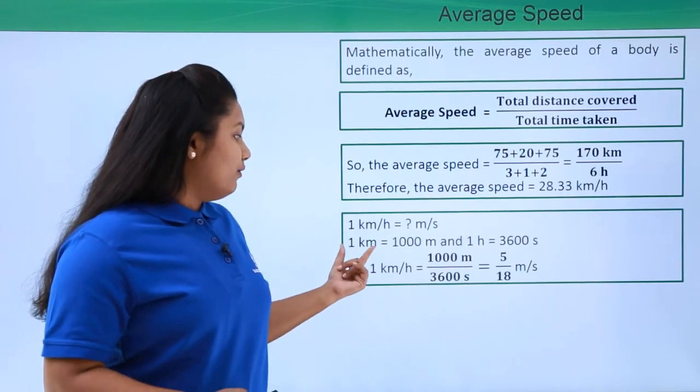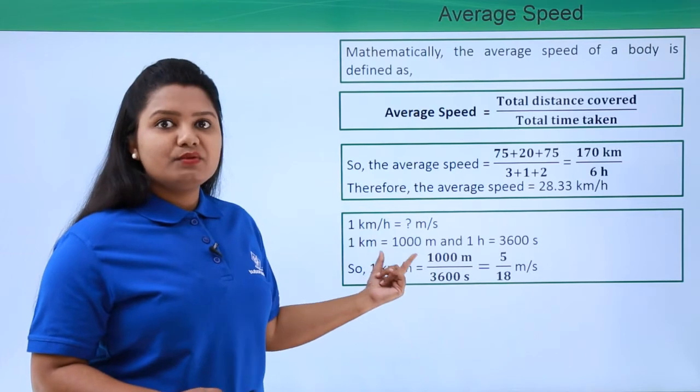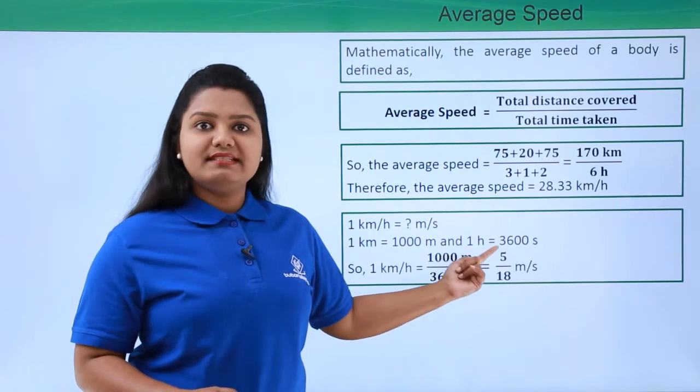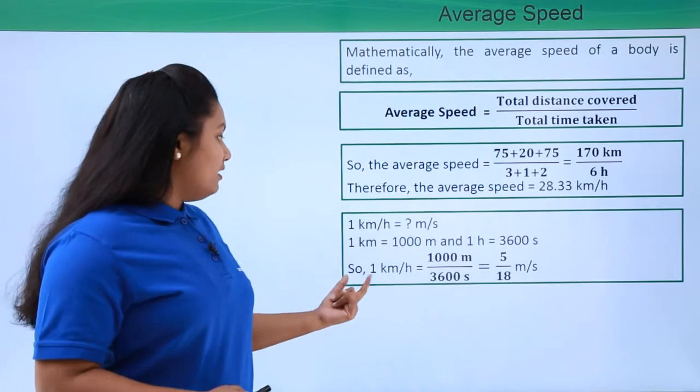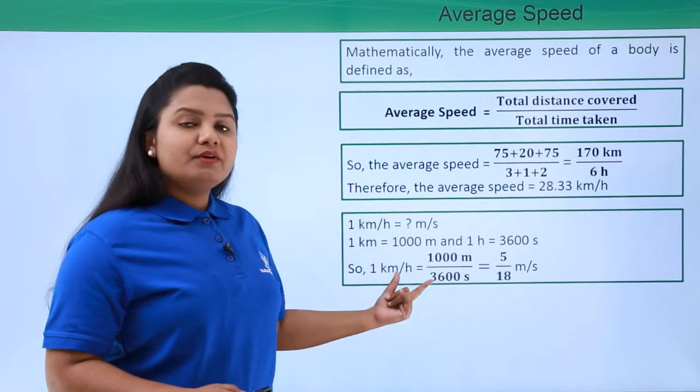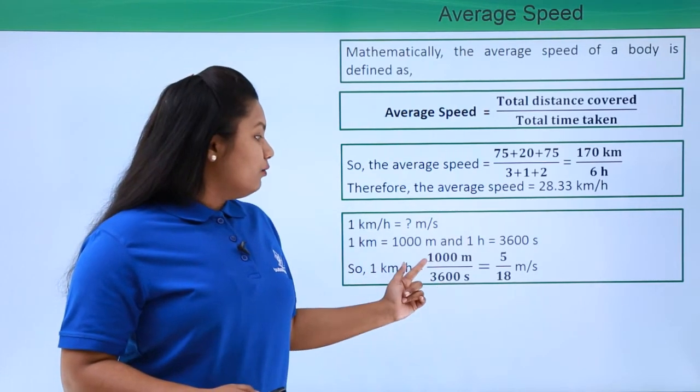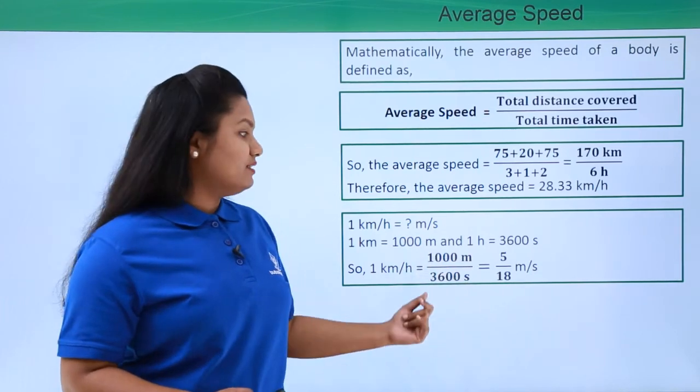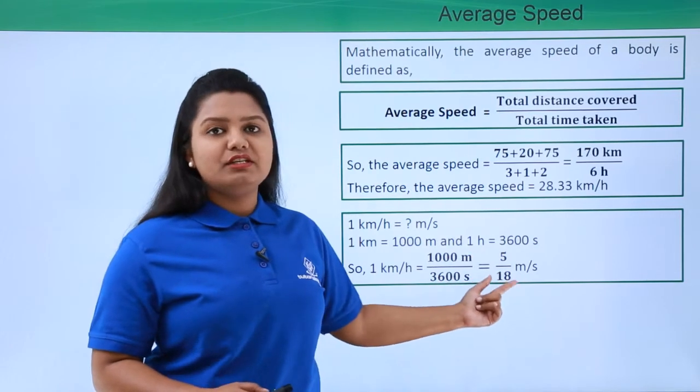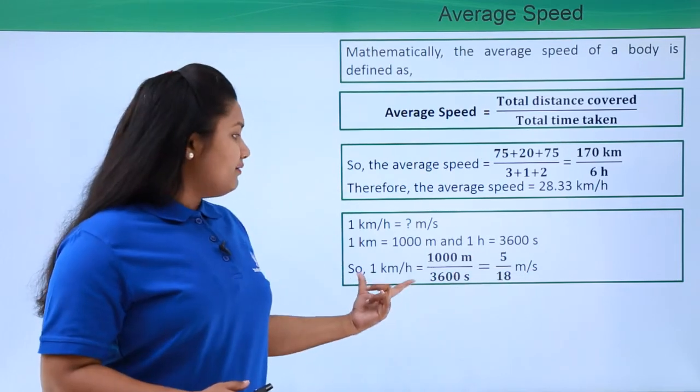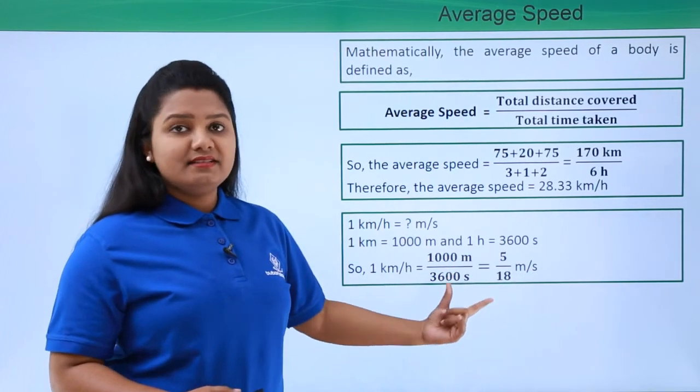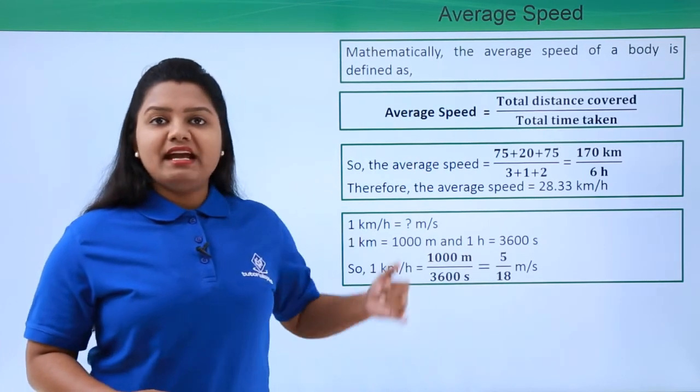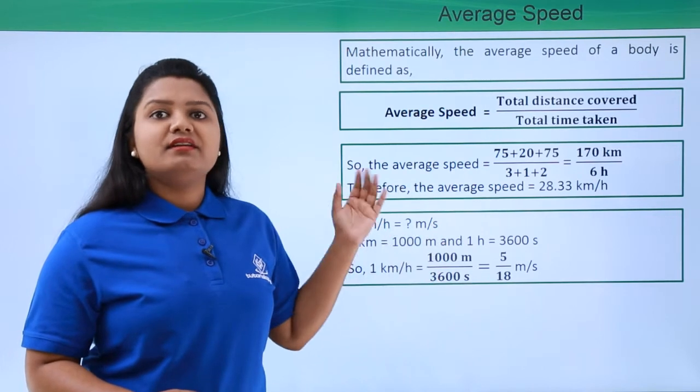Now we know that 1 kilometer equals 1000 meters and 1 hour equals 3600 seconds. Now 1 kilometer per hour will therefore equal 1000 meters divided by 3600 seconds, which yields 5 divided by 18 meters per second. You can very well keep this formula in mind, that is 1 kilometer per hour equals 5 by 18 meters per second, and apply it whenever required.